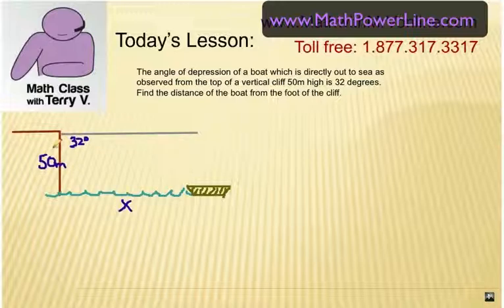The cliff is 50 meters high from the observer down to the water, and the boat is X meters from the cliff. The angle of depression, which is when you're standing on top of the cliff looking straight across horizontally - that's called line of sight. If you angle down from there, 32 degrees, to look at the boat.